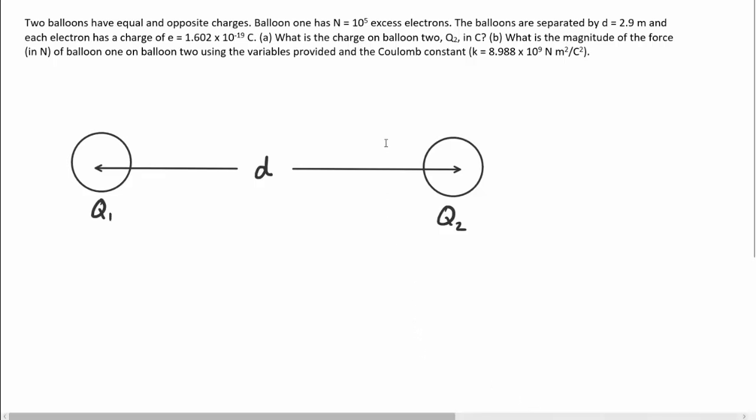In order to determine, in Part A, the charge on the second balloon, we want to note that the question tells us that the two balloons have equal but opposite charges. So if we could figure out the charge on balloon one, that's going to help us determine the charge on balloon two. Notice that whatever the sign of the charge on balloon one is, it's going to be the opposite of the charge on balloon two.